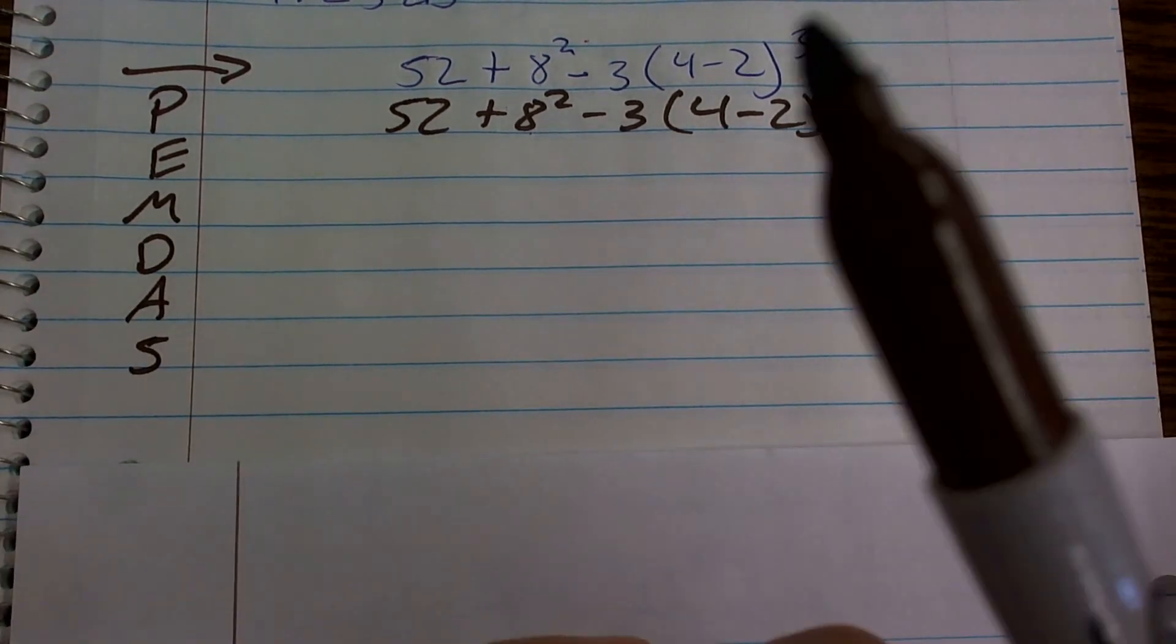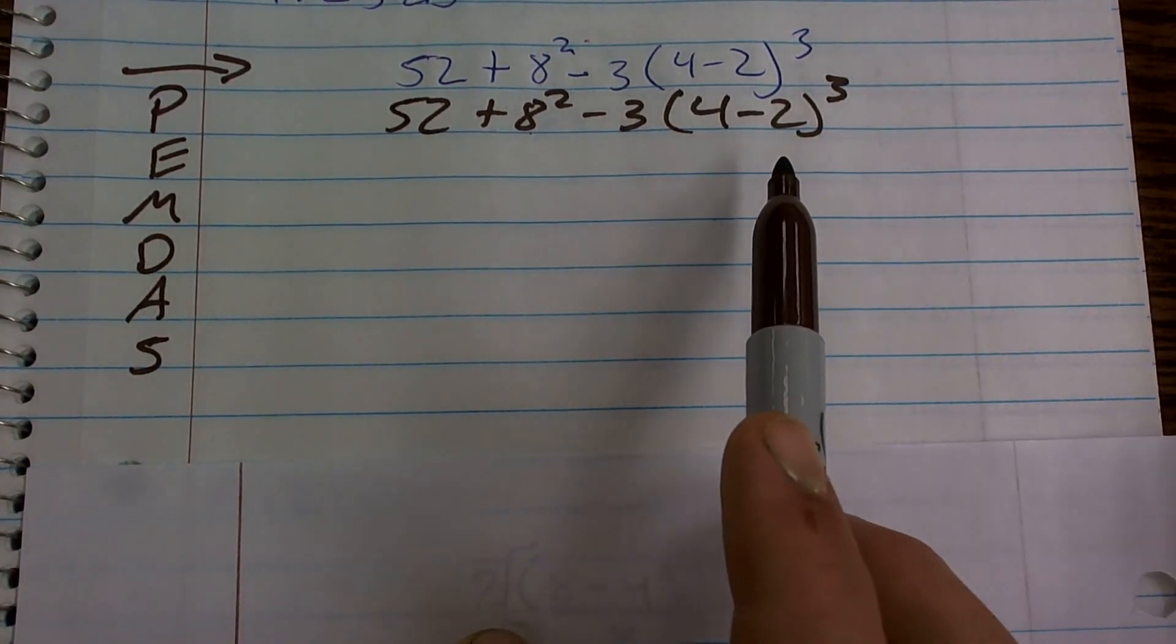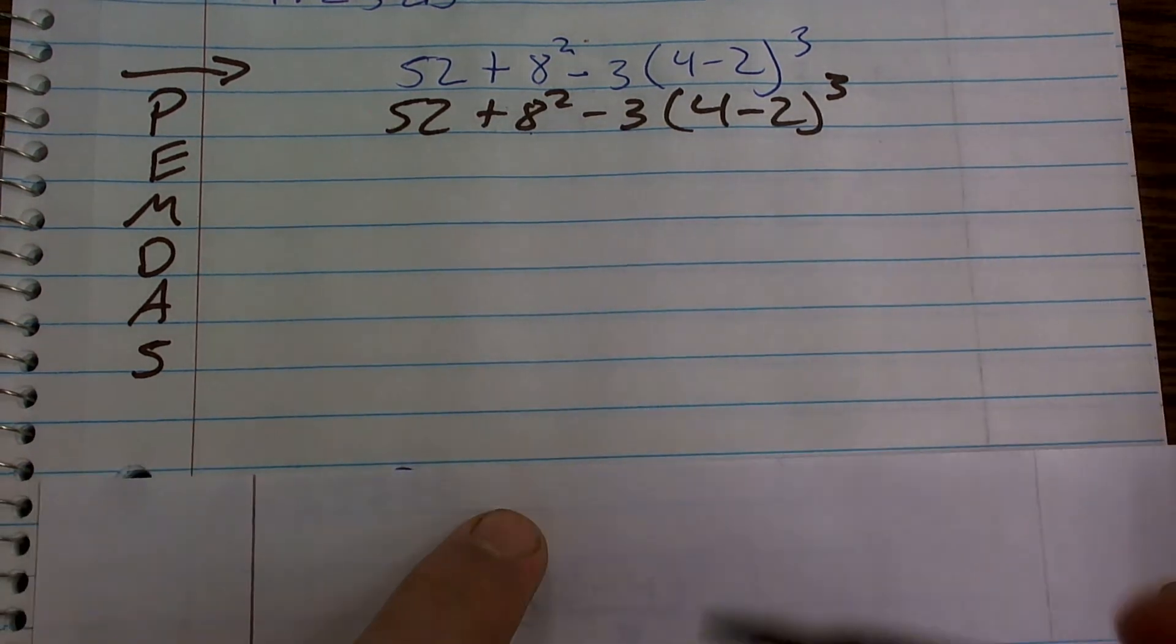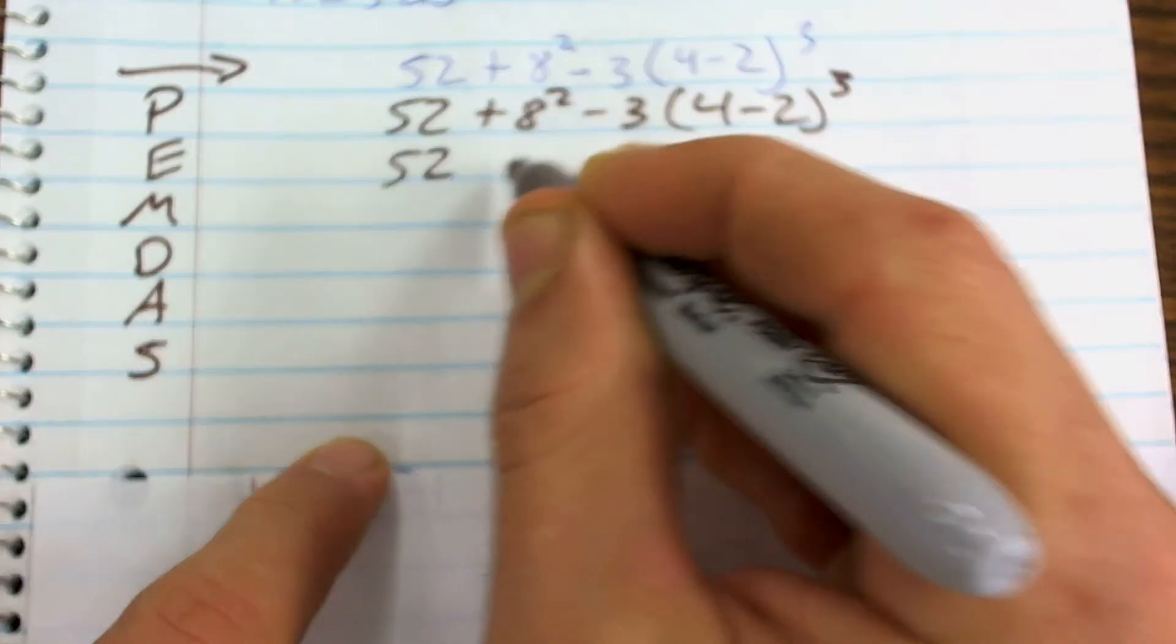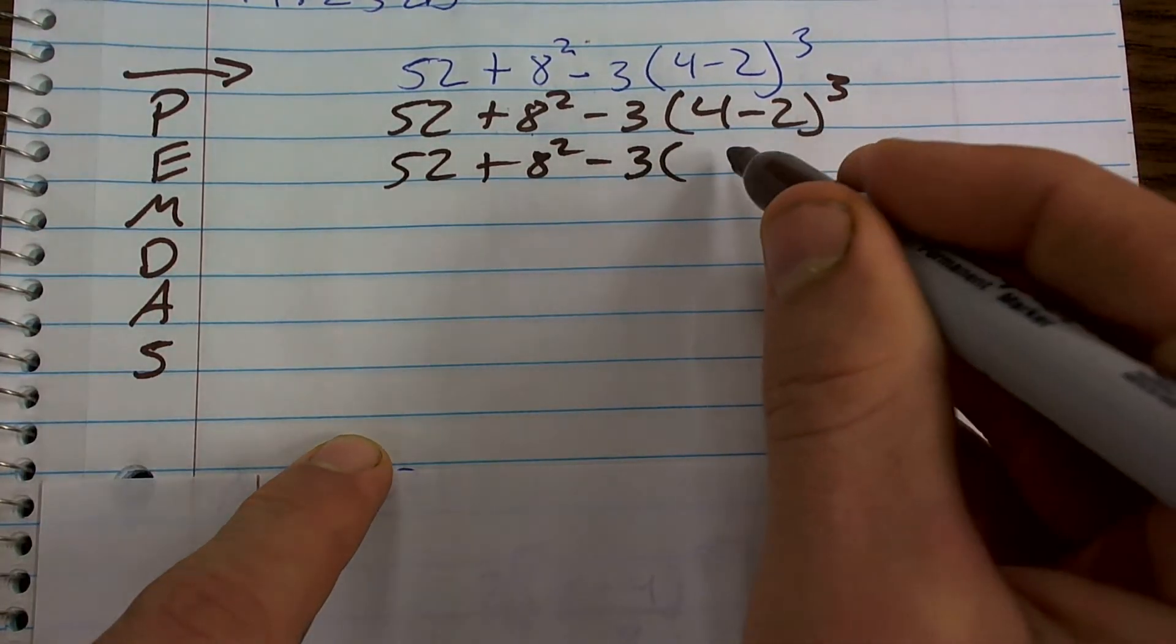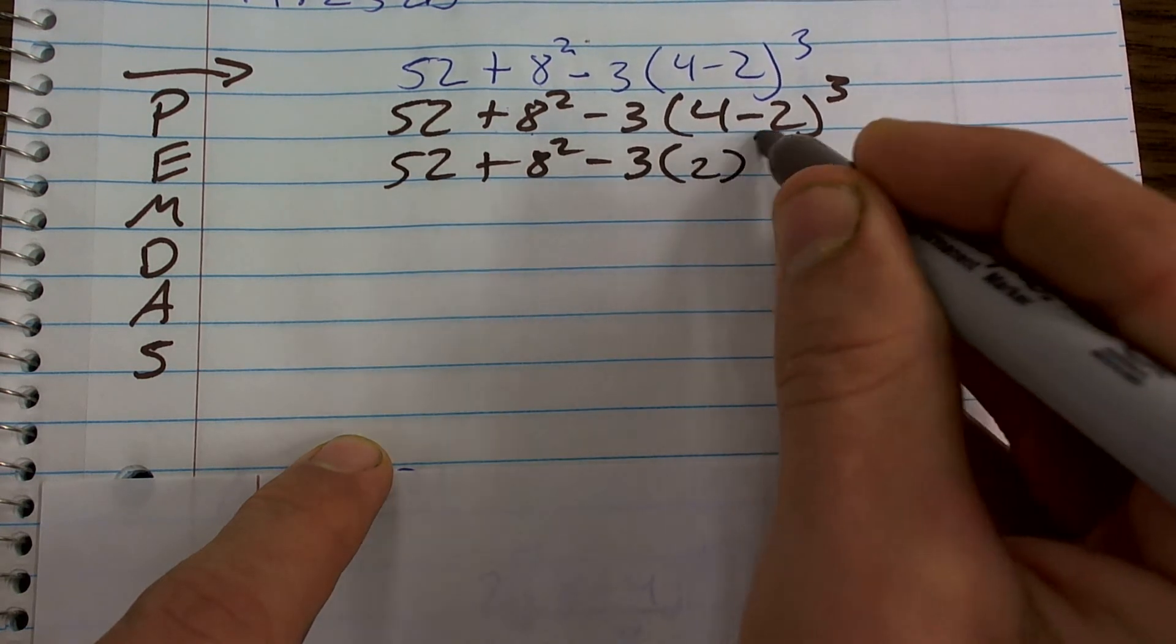So the first thing I need to do is look for my parentheses, which I have right here. So I need to complete my operations within those parentheses. So here I have 4 minus 2, which is obviously 2. So I'm just going to rewrite the whole problem with now having completed 4 minus 2, which is 2 cubed.